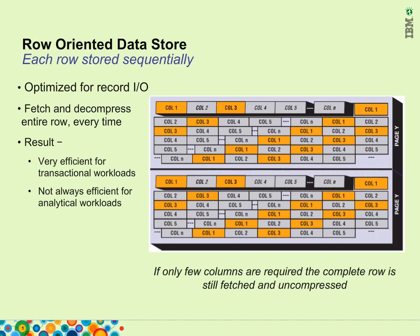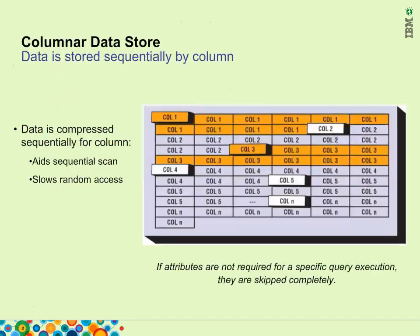Most of the data is moved and decompressed without even being used. Query engines which are optimized for analytical queries tend to use a column store approach. In a column store, the data of a specific column is stored sequentially before the data of the next column begins. If attributes are not required for a specific query execution, they simply can be skipped completely, not causing any I/O or decompression efforts.